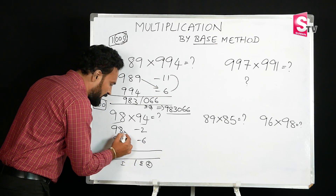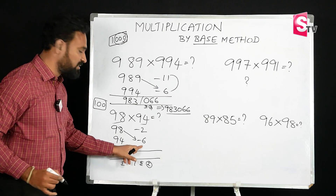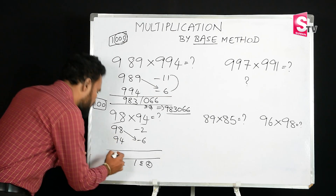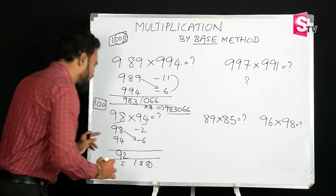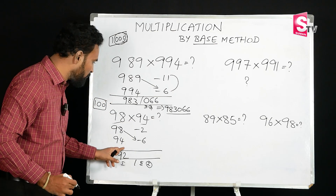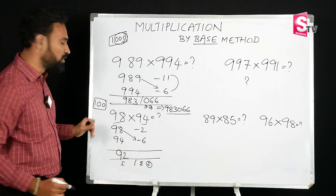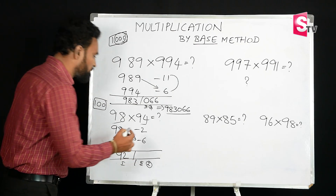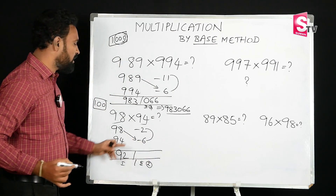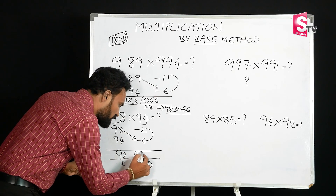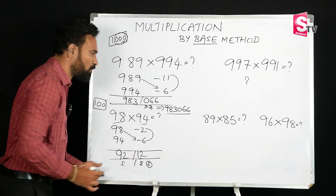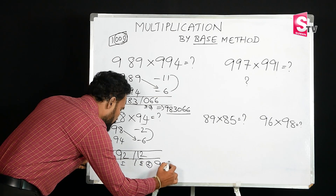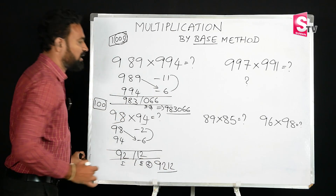First part: cross subtraction of 98 and 6, or 94 and 2 — both give 92. Second part: 2 times 6 equals 12. We need two digits in the second part, and 12 already has two digits — no adjustment needed. The final answer is 9212.